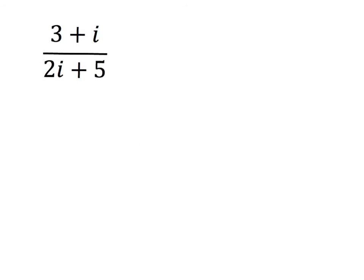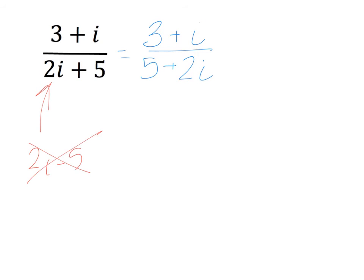The next thing I'd like to look at would be how to rationalize the denominator. Our goal is to get rid of the imaginary numbers in the denominator. I intentionally wrote this backwards — we're used to seeing the real part and then the imaginary part. So I want to make sure that you realize when we go to multiply, the conjugate of this is not 2i minus 5. That's not the case, because that changes the sign on the real part, and we want to change the sign on the imaginary part.